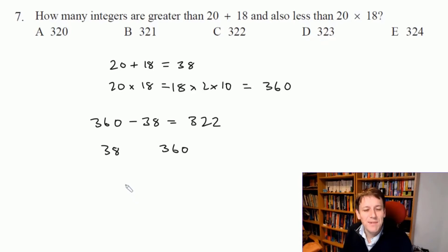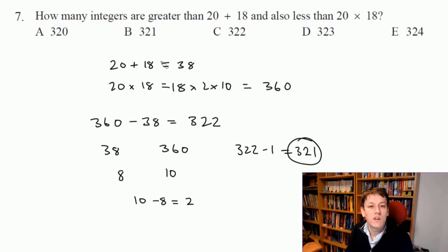A great way of thinking about these sorts of rules is just to try it in a simpler case. What would it be if it was just how many are there between 8 and 10? Well there's only 1, just 9. So the answer would be 1 if it was how many integers greater than 8 and less than 10, and 10 minus 8 gives us 2. So actually this method of just subtracting the lower one from the higher one kind of over counts by 1. So the answer here is 322 minus 1 which is 321, so the answer is B.